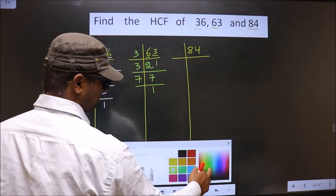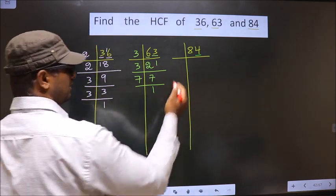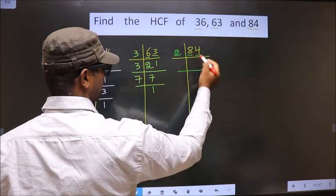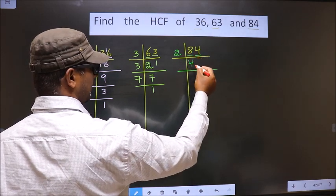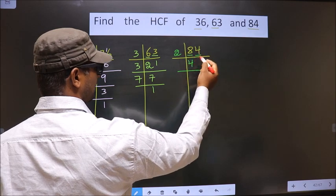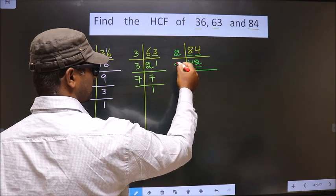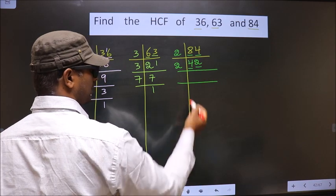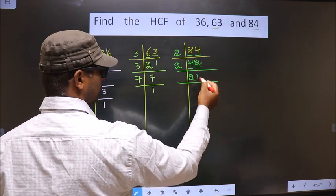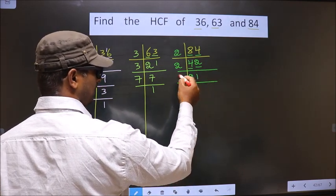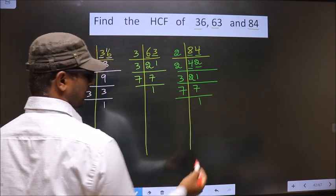For the number 84, the last digit is 4, which is even. So we take 2 here. The first number is 8; 2 fours is 8. Next number is 4; 2 twos is 4. Now in this number the last digit is 2, which is even. So we take 2 here. First number is 4; 2 twos is 4. Next number is 2; 2 ones is 2. Now here we have 21. 21 is nothing but 3 sevens. Now 7 is a prime number, so we take 7 and 1.